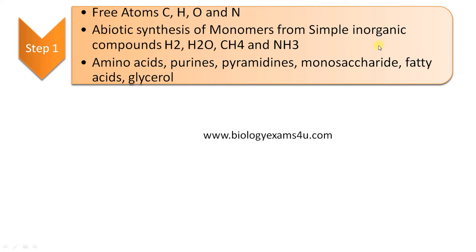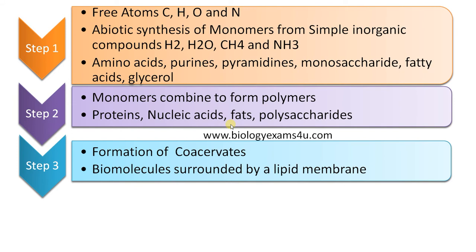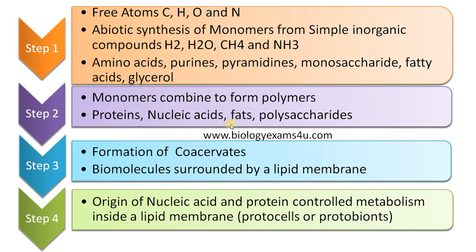Step two: these monomers combine to form polymers — the present-day biomolecules: proteins, nucleic acids, fats, polysaccharides, etc. — which are essential for life. Step three: formation of coacervates, where all these biomolecules are surrounded by a lipid membrane. Step four: formation of the protocell, where there is nucleic acid control and protein-controlled metabolism inside a lipid membrane — called a protocell or protobiont — the ancestor of all life forms.